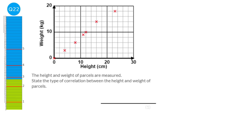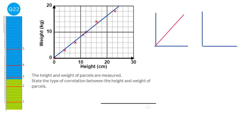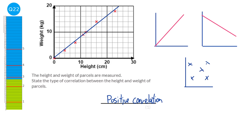Drawing a line of best fit: if it's increasing, the data has positive correlation. If the line of best fit is decreasing, it's negative correlation. If the points are scattered everywhere with no pattern, there's no correlation. This data's line of best fit is increasing, so it's positive correlation.